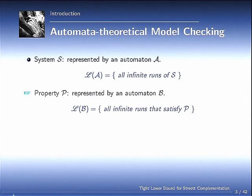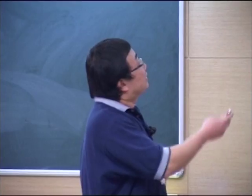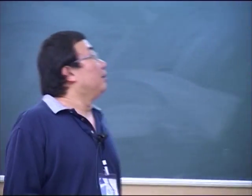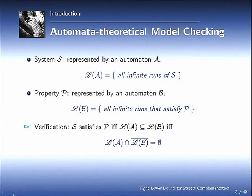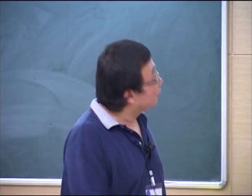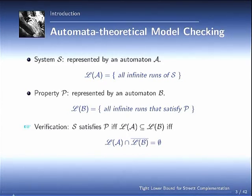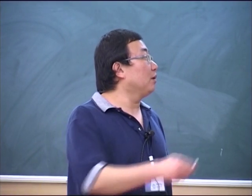This is joint work with Yang Cai. First, the introduction. We have heard a lot about model checking since the beginning of this conference, and here I talk about automata-theoretical model checking. Basically, the system is represented as an automaton and the property is also represented by another automaton. The verification reduces to a language containment problem, and it can be reduced by these two operations. The intersection is fairly trivial, so the complementation is somehow crucial in the whole efficiency of the algorithm.